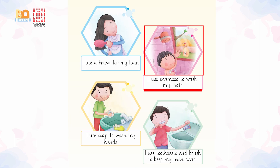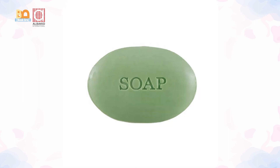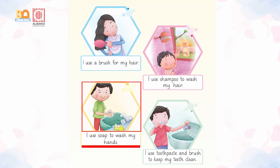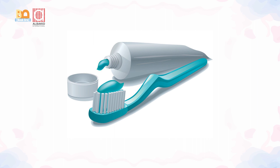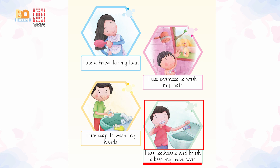What is this? This is a soap — we use soap to wash our hands. And what is this? This is a toothpaste. And what about this one? This is a brush, and we use toothpaste and a brush to keep our teeth clean. Very good!